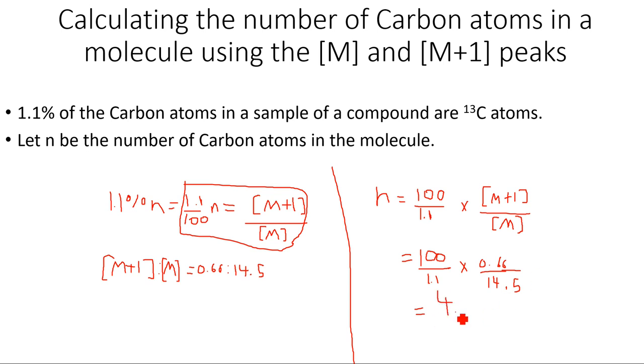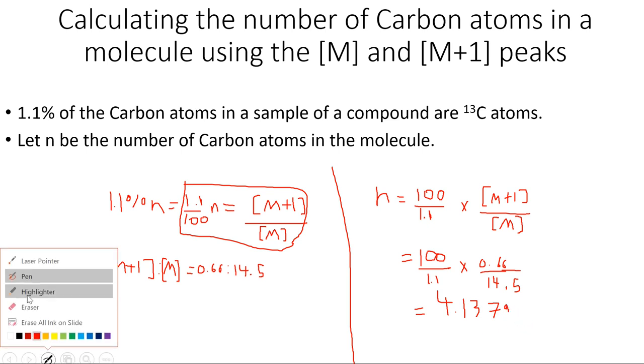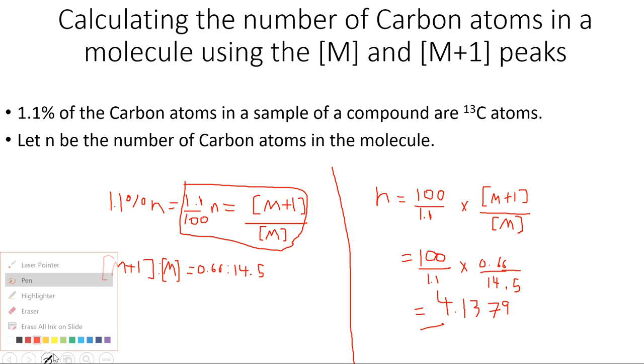What I get is 4.1379 and it keeps going on, a large decimal value. But obviously I cannot have 4.1 carbon atoms in my molecule for obvious reasons, so actually what I do is round this off to 4, the nearest whole number.